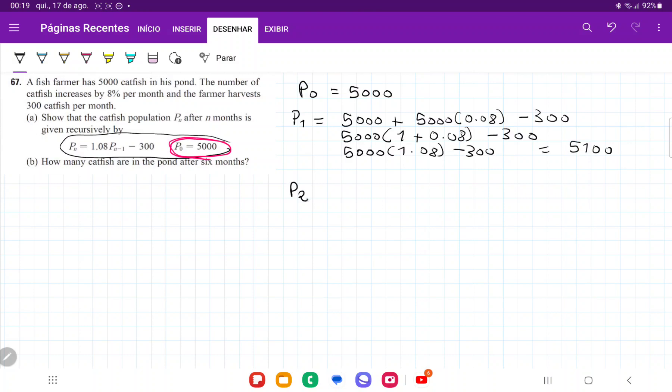So for P2, we're going to have now, we begin with 5,100, because that's the beginning of the month. And then it grows by 8%. So as we could see here with P1 growing by 8%, it means multiplying by 1.08. So it's going to be 5,100 times 1.08. And then he's going to harvest 300. So minus 300. And that is going to give us 5,100 times 1.08 minus 300. That is going to be 5,208.